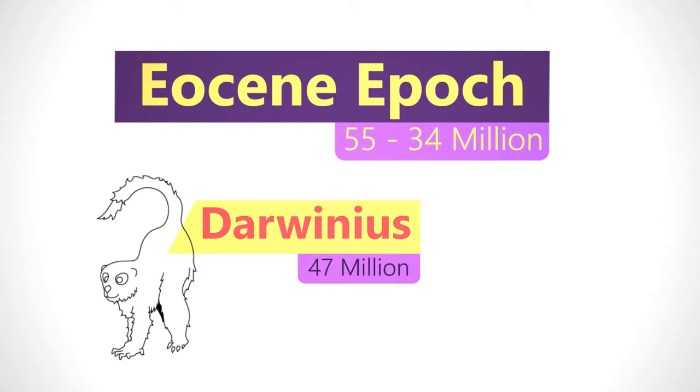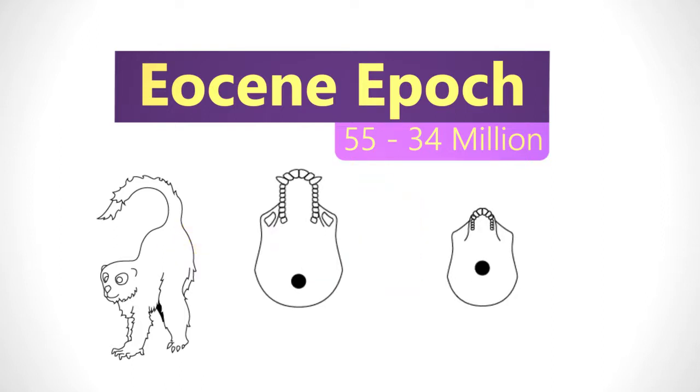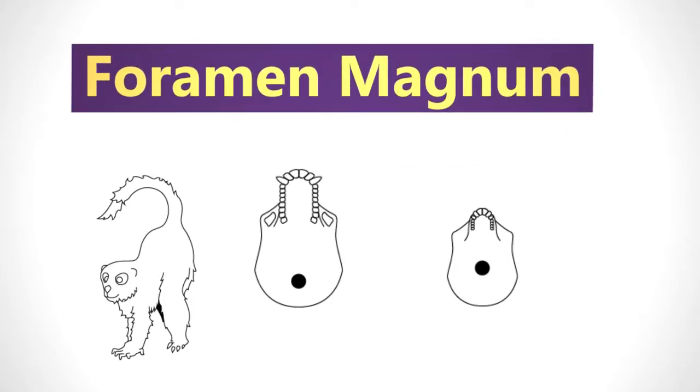During this time, an important evolutionary change happened inside primates' heads. The hole, known as the foramen magnum, which allows the spinal cord to connect to the brain, began to shift from the back of the base of the skull towards the center. This implies that some of these early primates were shifting towards a more upright walking position.